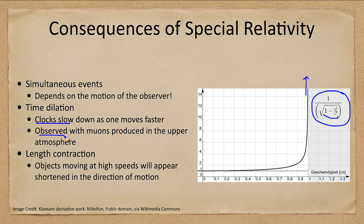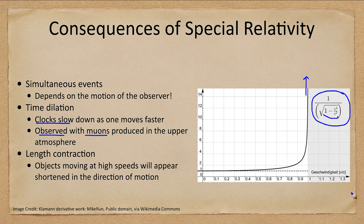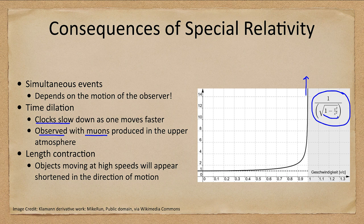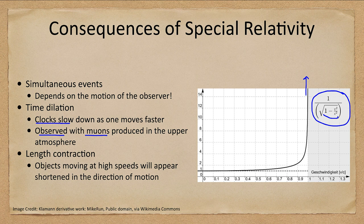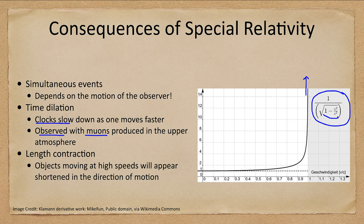We have actually observed this on Earth. Muons are elementary particles produced in the upper atmosphere when cosmic rays interact with atoms. Muons don't live long enough to reach the ground - they decay very quickly. However, because they're moving so fast, close to the speed of light, their internal clocks slow down and they can survive the trip to Earth's surface.